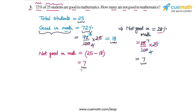Let me summarize the two approaches. We are told the total number of students is 25 and the percentage good in mathematics is 72%. In the first approach, we calculate the number of students good in mathematics — which is 18 — and then subtract that from 25 to get the number not good in mathematics.